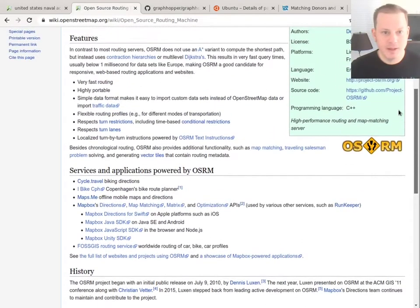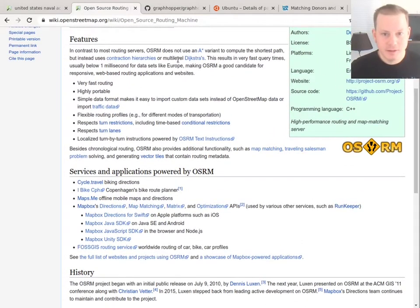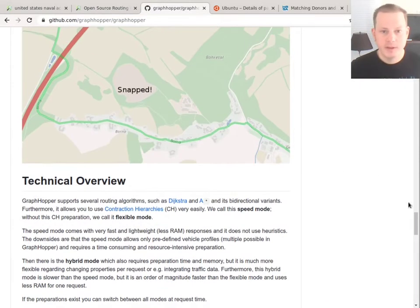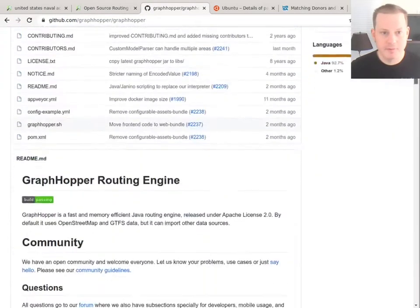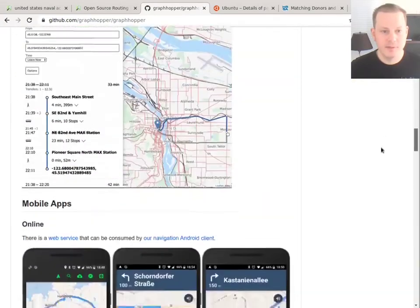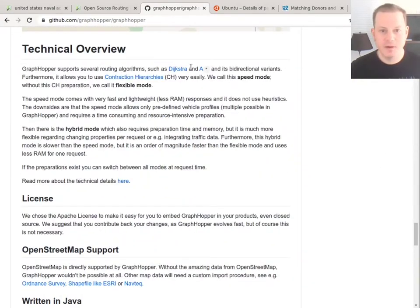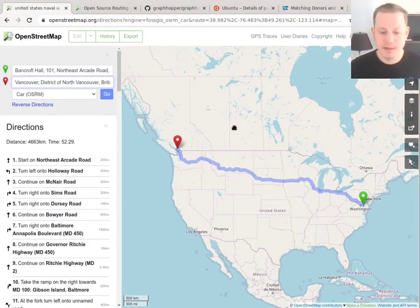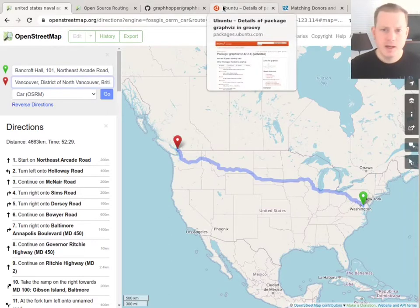This is the open source routing machine. And if you look this up, it'll tell you how it works. It's based on multi-level Dijkstra's, whatever that means, and contraction hierarchies. This is the graph hopper algorithm, which is another one that's available. And they talk about what algorithms they're using, some combination of Dijkstra's and A-star with contraction hierarchies. So interesting stuff. That's one example of a graph problem that's pretty big, where we want to think about what are efficient and effective algorithms to use. That's something that you've probably seen before, graph search.